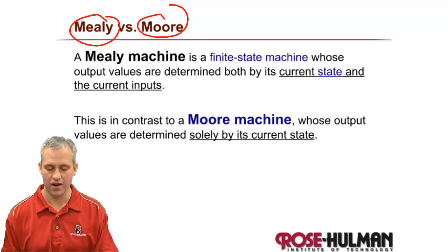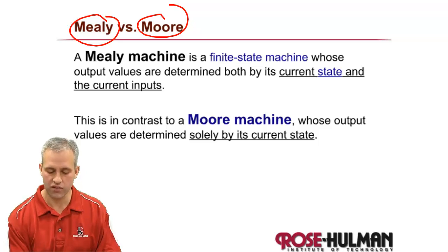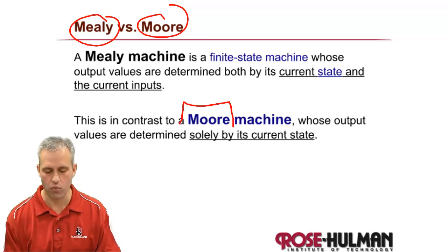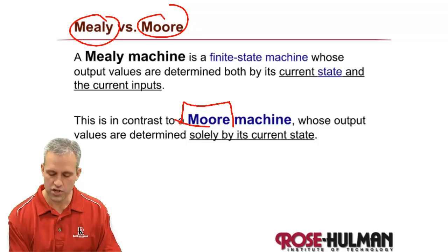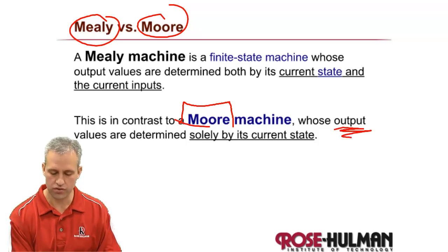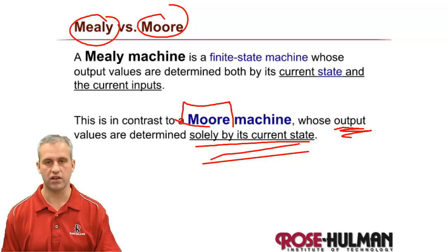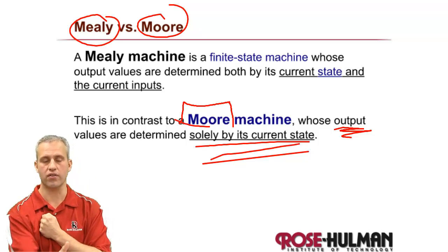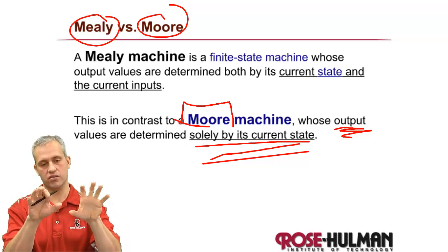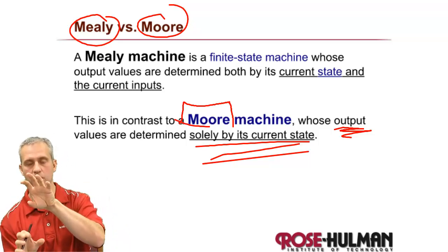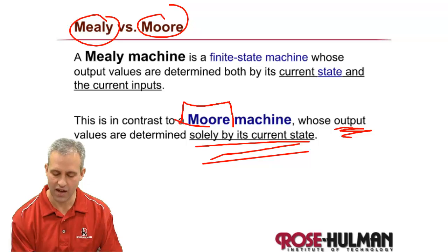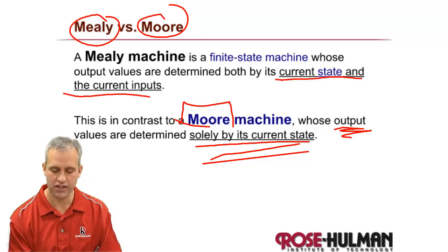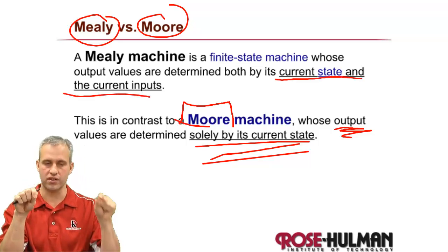They're very similar. The difference is simple: everything you've been doing so far is what's called a Moore machine. A Moore machine's outputs are solely determined by the current state. If you've got a state, you know what the outputs are in that state. A Mealy machine is everything a Moore machine is plus a little bit more, and that is that the outputs are a combination of the current inputs and the current state.